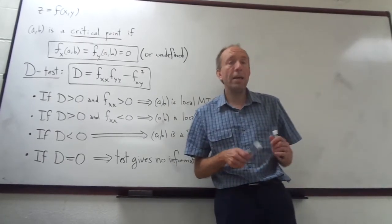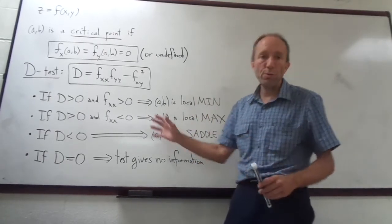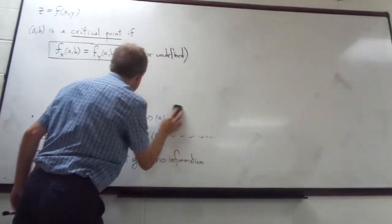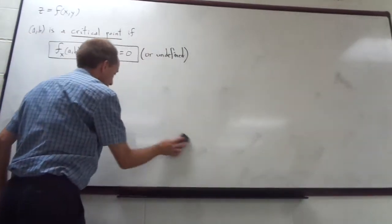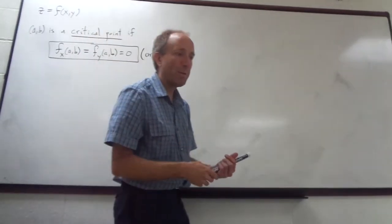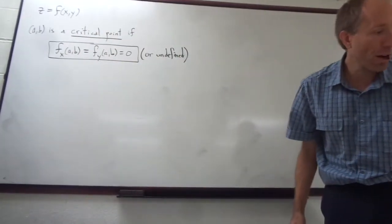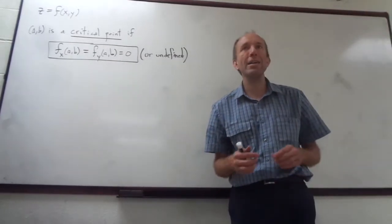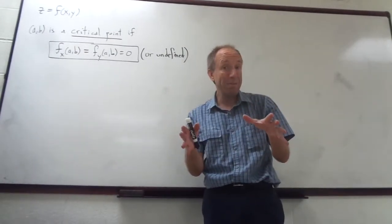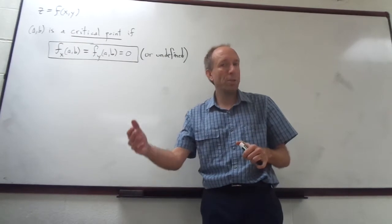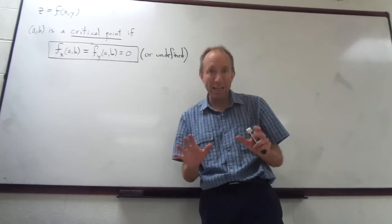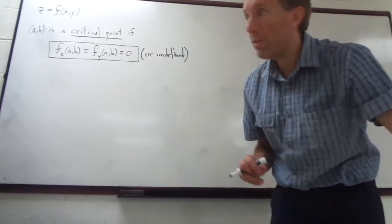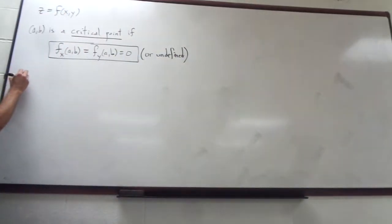Towards the end of class I mentioned that sometimes you don't need to use the D-test. If you're talking about a physical problem where there has to be a minimum or a maximum, then sometimes just from the nature of the problem you'll know which one you're dealing with. For example, I gave you the equation of a plane x + 2y + 3z = 4 and asked for the point on that plane closest to the origin — that was one example. Let me give you another.